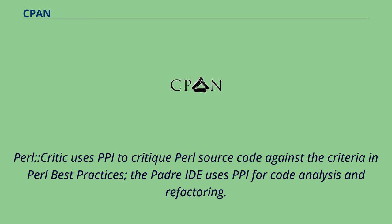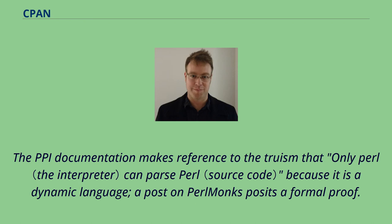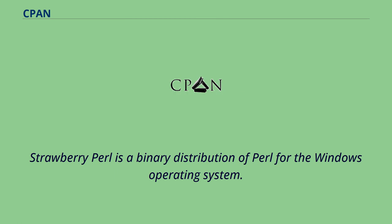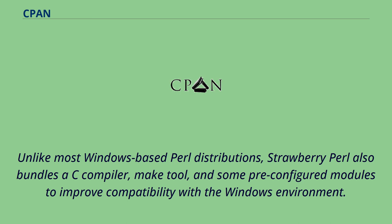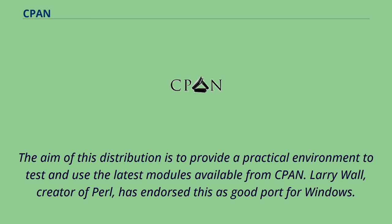The PPI documentation makes reference to the truism that only Perl can parse Perl because it is a dynamic language; a post on Perl Monks posits a formal proof. Strawberry Perl is a binary distribution of Perl for the Windows operating system. Unlike most Windows-based Perl distributions, Strawberry Perl also bundles a C compiler, MakeTool, and some pre-configured modules to improve compatibility with the Windows environment. The aim of this distribution is to provide a practical environment to test and use the latest modules available from CPAN.